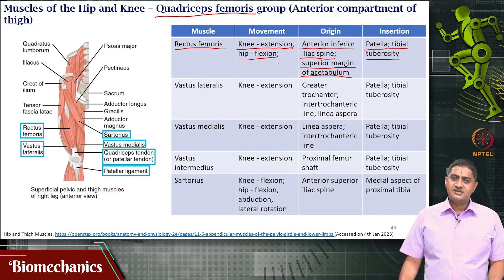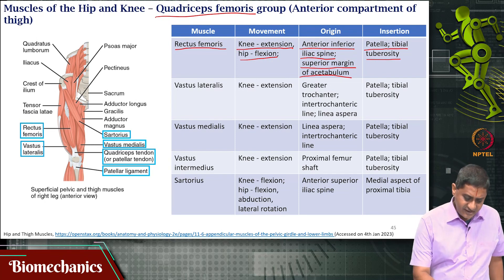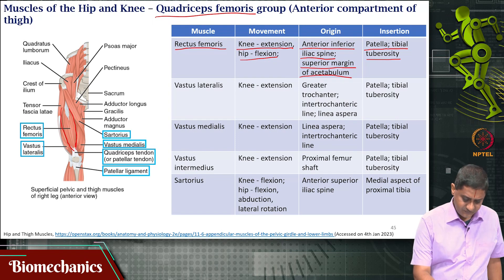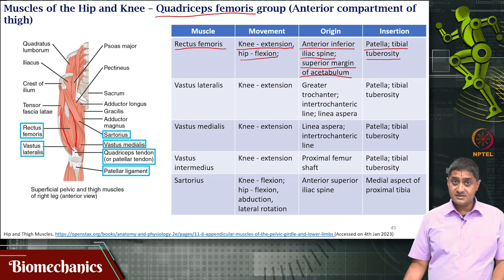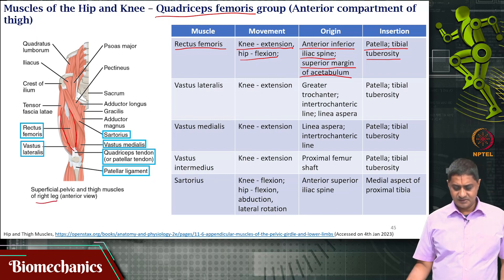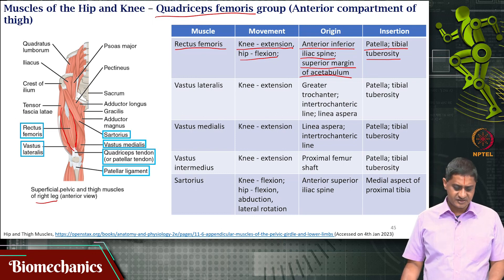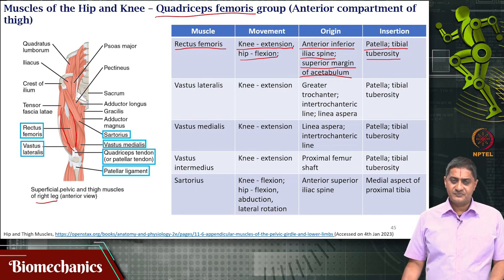Of these four muscles, the rectus femoris is located on the anterior side of the thigh. This picture is of the right leg. The big muscle that you see on the thigh is essentially mostly the rectus femoris — the anterior side of the thigh is where the rectus femoris is located.